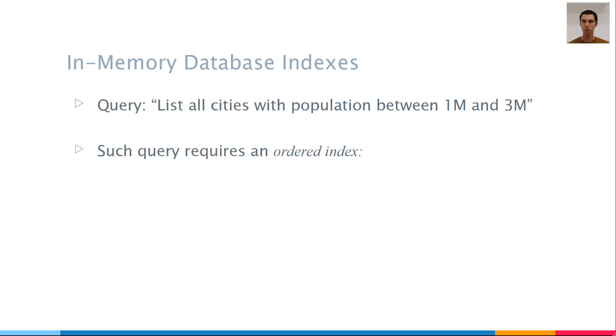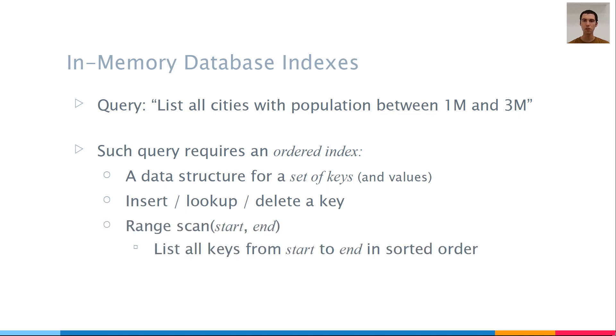An ordered index is a data structure that indexes a set of keys that can also have associated values. It allows to insert, lookup, or delete a key. And most importantly, it can efficiently perform a range scan, which means listing all keys from a given start key to a given end key in a sorted order. This operation is what databases use for queries like the one here.